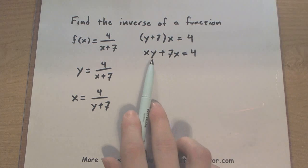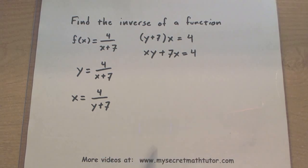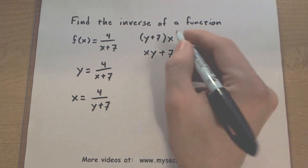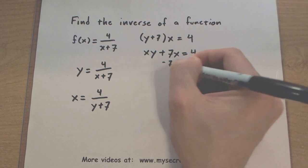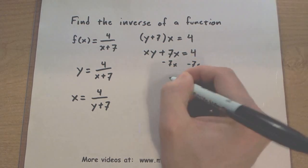Things are looking pretty good. Remember, we want to get the y all alone. So, let's go ahead and start moving these things to the other side. Maybe subtract 7x.